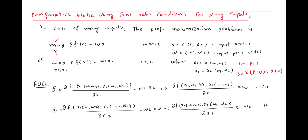If the firm is hiring two factor inputs, the profit maximizing problem can be written as: maximize over x1 and x2, where the price of output times f(x) — here x is a vector of two factor inputs — minus w1 and w2, which is the vector of factor prices, times the vector of factor inputs. This gives total revenue minus total cost. To obtain the optimum conditions we apply the first and second order conditions.